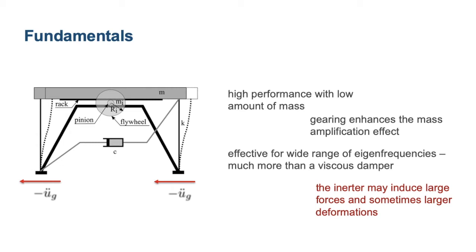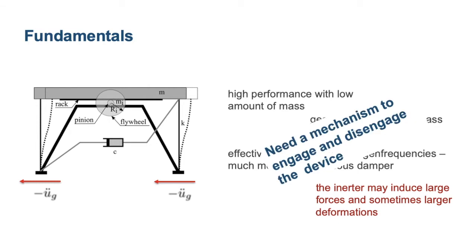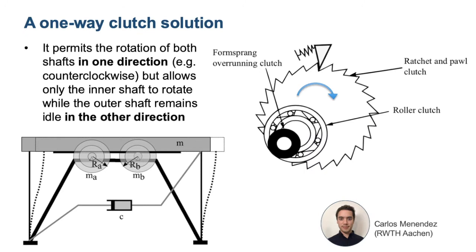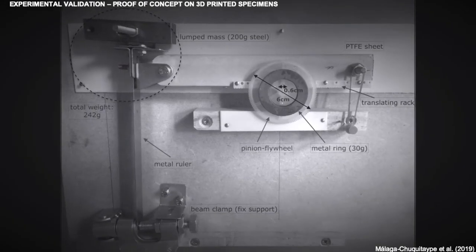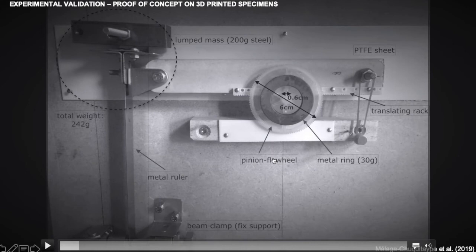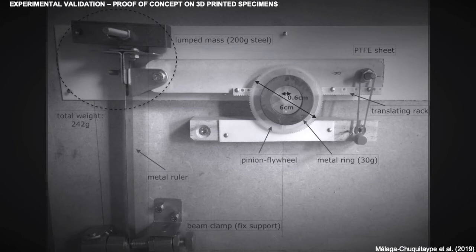And that means that sometimes, not always, but sometimes the inerter will end up driving the motion of your structure. We need to limit displacements in structures because displacements are related to strains and strains to damage. So we want to limit damage. One of the options for solving this is to have a mechanism that will detach that inerter when it's not needed and will attach again when we need it. That's basically a clutch that permits the rotation of both shafts in one direction, but only allows one shaft to rotate in the other direction. That was the work of Carlos, who visited us from Aachen.